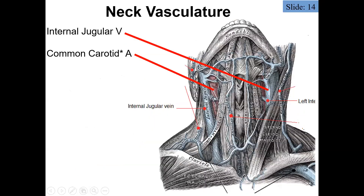Let's talk about some of the vasculature in the neck. The two important vessels we'll look at are the internal jugular vein and the common carotid artery. These are found running together with the vagus nerve in the carotid sheath of the neck. The internal jugular vein drains blood from the head, while the common carotid artery brings blood toward the head, face, and scalp.